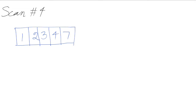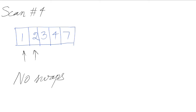At scan number four we have [1, 2, 3, 4, 7] from the previous scan. We reset the pointers to the beginning. One and two are already in the right order, so we don't swap them. This is the first time we did not do any swaps, which means we are done sorting — the array is now sorted.